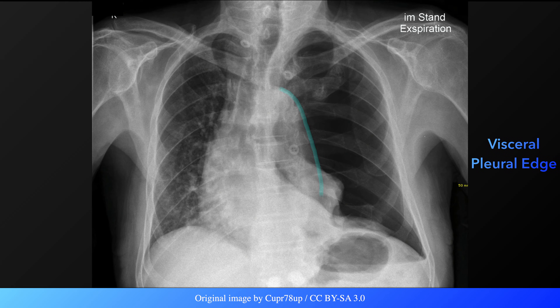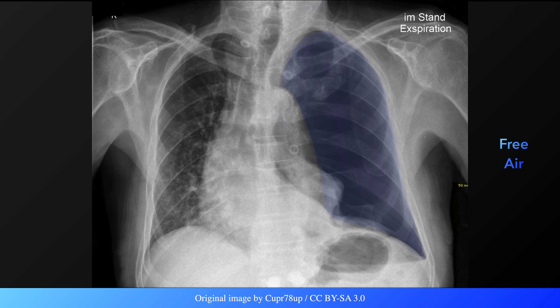The edge of the lung is clearly demarcated — this is the visceral pleural edge. Bronchovascular markings are typically absent beyond the visceral pleural line, resulting in an area of increased transradiancy, that is, blackness. This area is filled with free air.